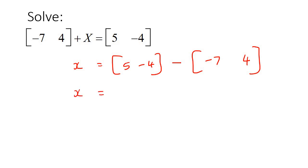So if we're to work out x, you're going to end up with a matrix as your answer. So it's going to be 5 take away negative 7, which is 12, because a negative and a negative is a positive. And then it's going to be negative 4 take away 4, which is negative 8. And so that would be the final answer.